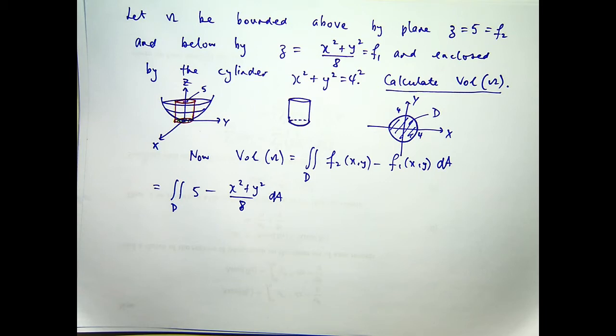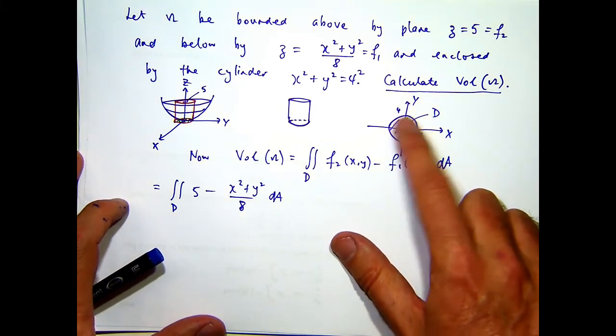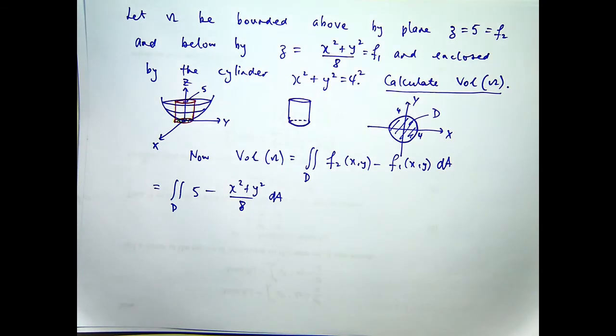So what I'm going to do is describe D in terms of polars and see how that goes. Now, why polars? Why not something else? Well, first of all, this is a polar type rectangle. And secondly, I've got an x squared plus y squared in the integrand. And we know that under the substitutions, x squared plus y squared in the polar setting will be very simple.